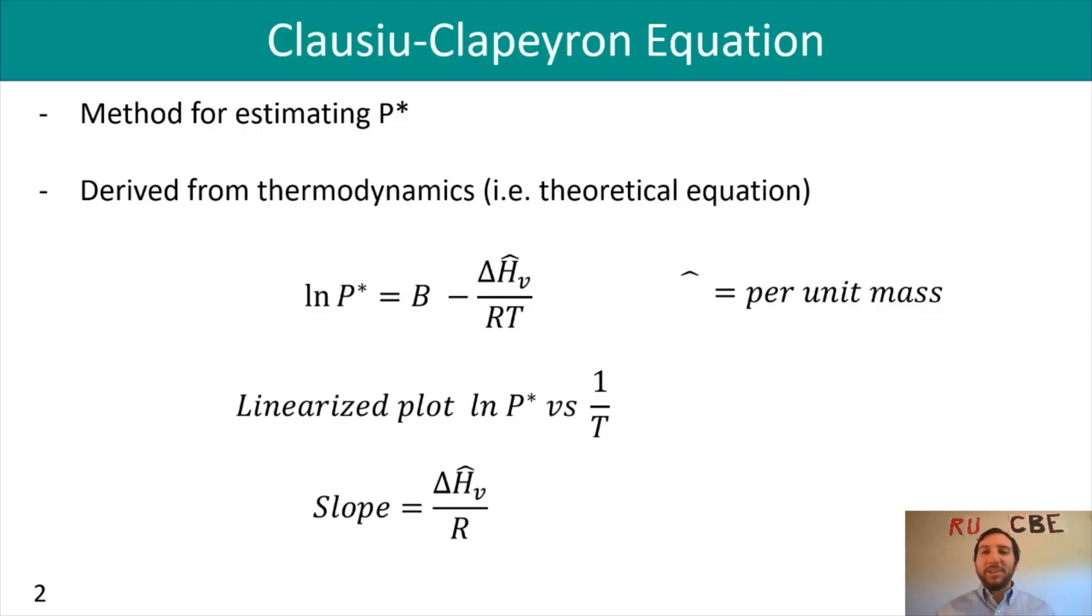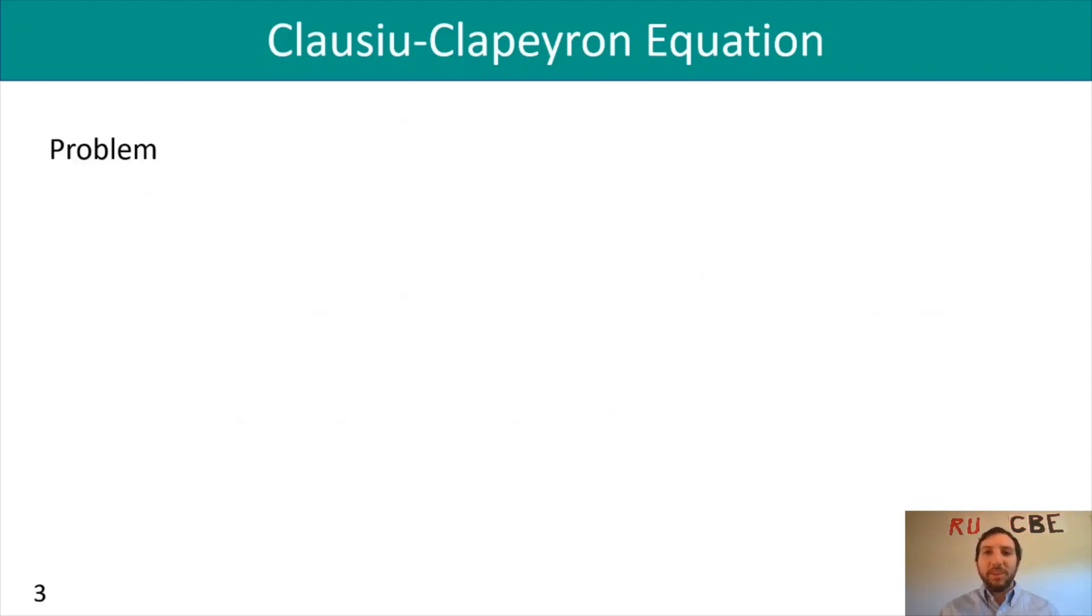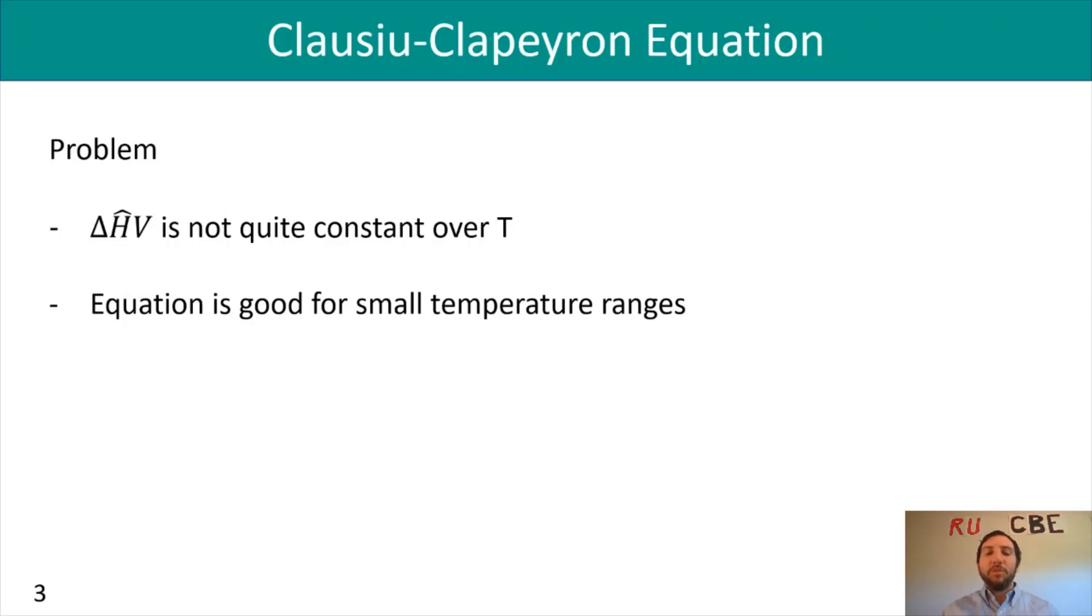You can mix and match however you like to obtain information on your system. Now, with the Clausius-Clapeyron equation, there are a couple of problems. The latent heat of vaporization is not quite constant over T, and this equation is good for only a small temperature range. The reason this is limiting is because it's a theoretical equation with no experimental results to support it. Because of that, this equation is not going to be the most worthwhile to use.